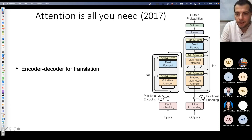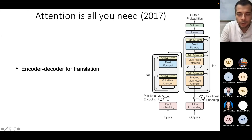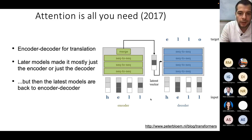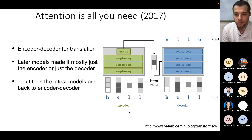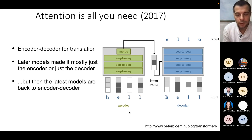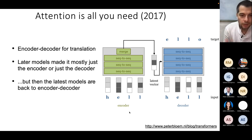In 'Attention Is All You Need,' transformer blocks appear in both the encoder and decoder, with positional embeddings added to both input and output embeddings. These blocks are repeated multiple times, forming the full encoder, which is composed of multiple transformer blocks placed one after the other. In this framework, both encoder and decoder are used for sequence-to-sequence translation.